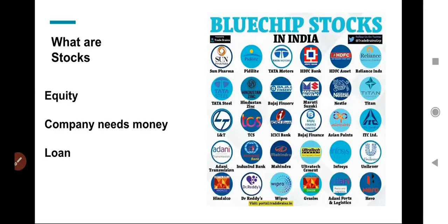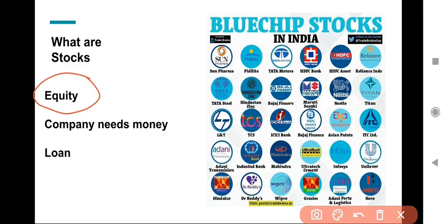To main point pe aata hoon — what are stocks? Aapne suna hoga aajkal share market mein log bahut invest karte hain, paise bahut lagate hain. To paise lagate kahan hain? Companies mein. Jaise aap dekh rahe hain right mein blue chip stocks ki list of Indian companies — HDFC Bank, Tata Motors, TCS, ICICI Bank — in sab mein aap paise lagate ho. Aap inke stocks kharid te ho. Equity bhi stock ko hi bolte hain — equity aur stock similar hain.